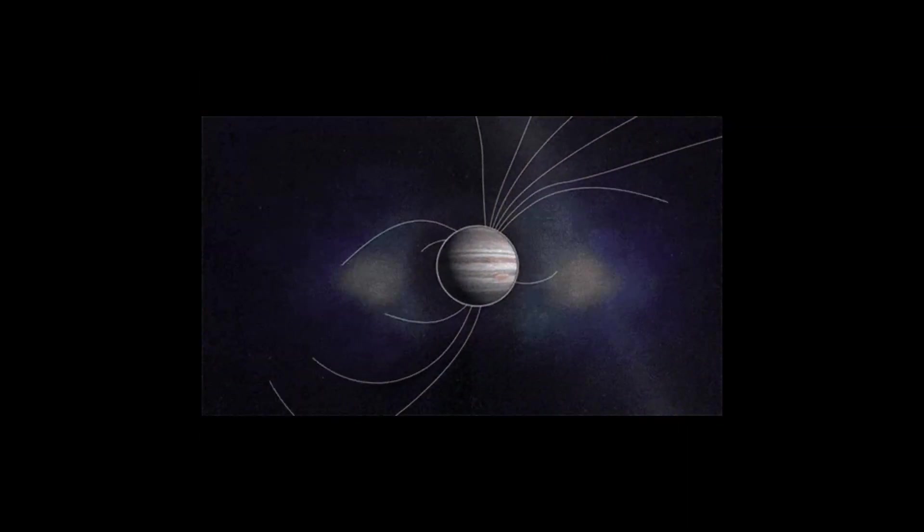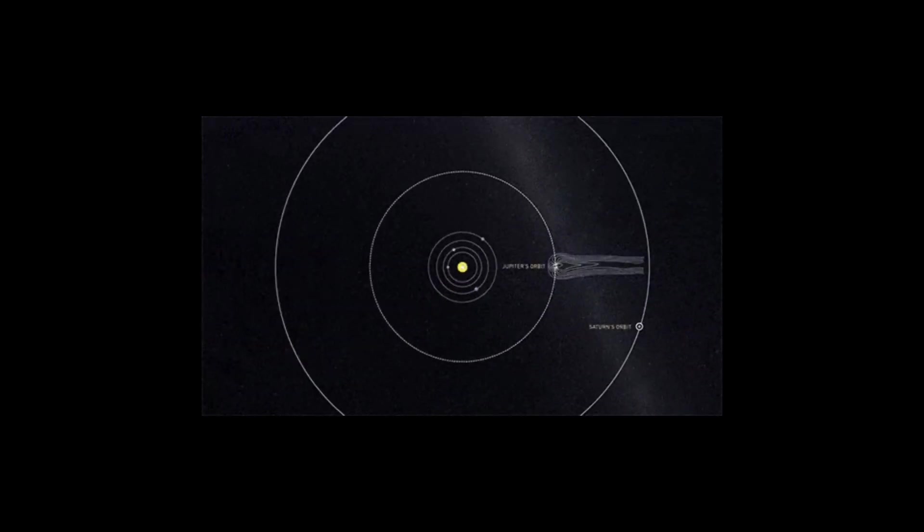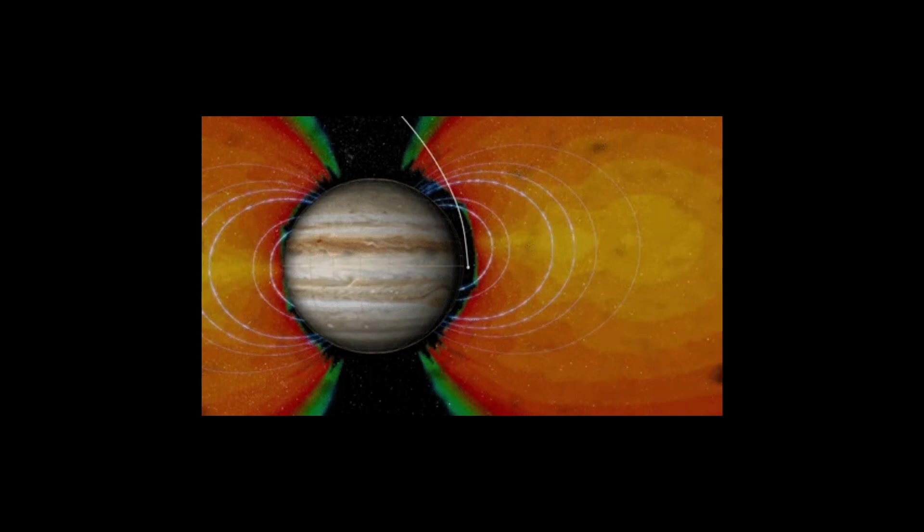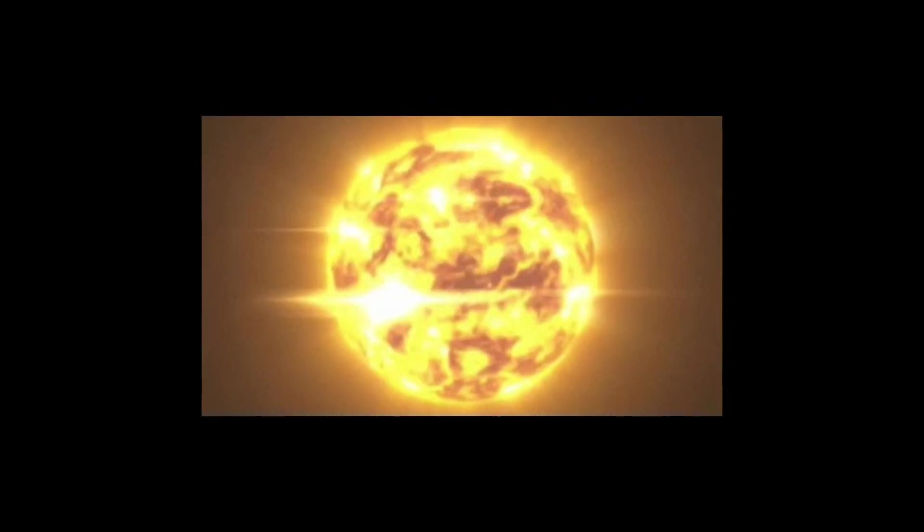Jupiter's magnetosphere extends out to nearly 3 million miles, 5 million kilometers, wide, along with being 150 times wider than the planet itself. It is also 15 times larger than the sun, making it one of the largest structures in our solar system.